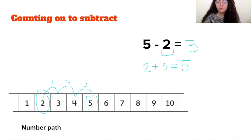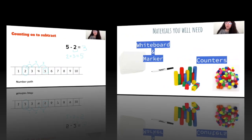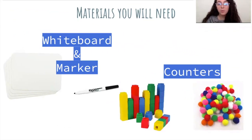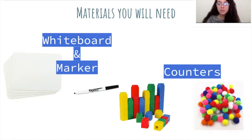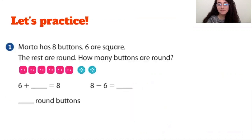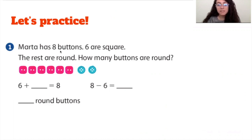Good job, scholars! Now I want you to take out your whiteboard and marker and your counter so you can practice with me. Go ahead and pause this video if you need to, then click play again when you're ready. Our first problem: Martha has eight buttons, six are square, the rest are round — how many buttons are round?